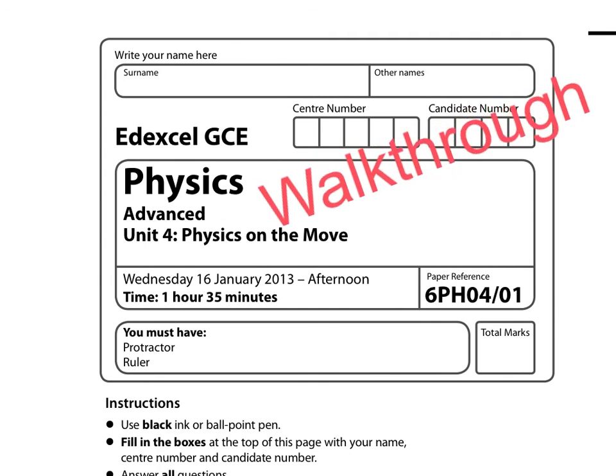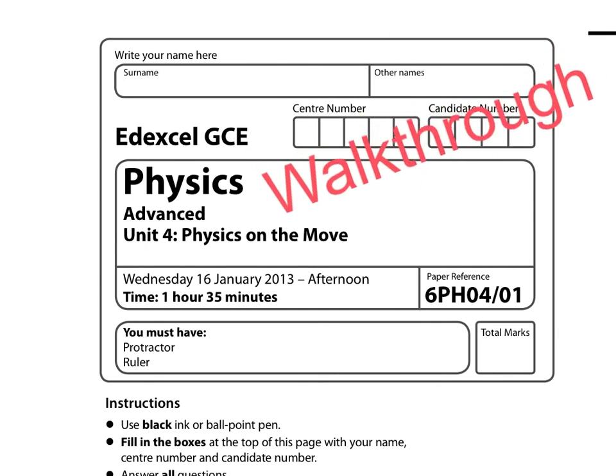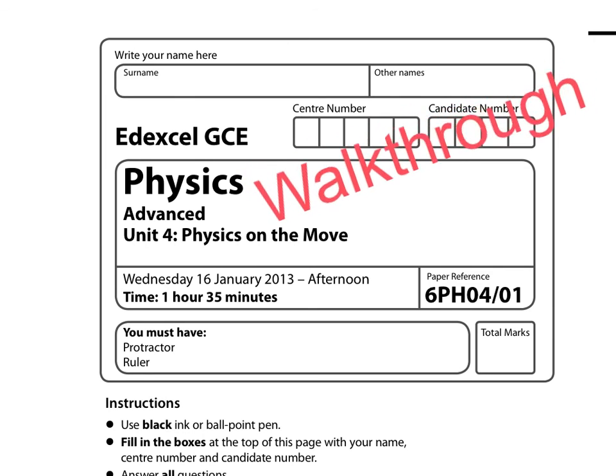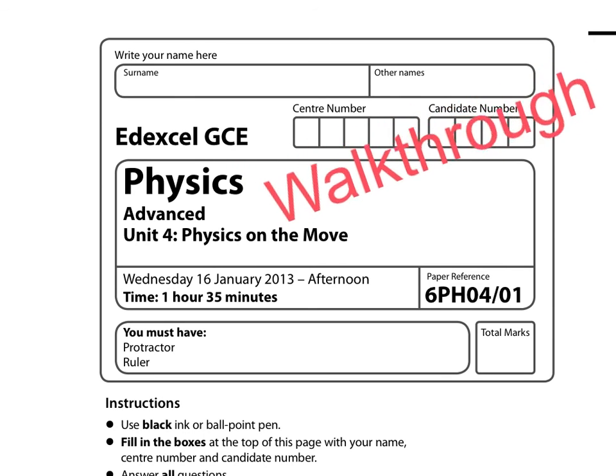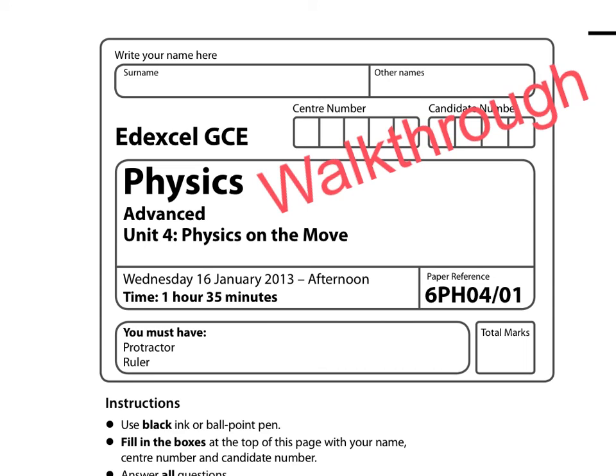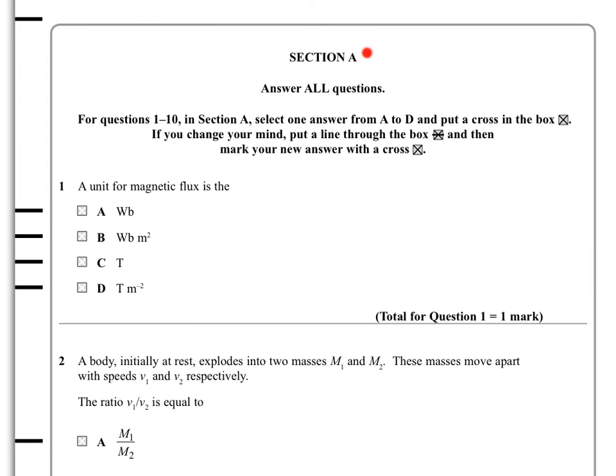Okay, so here we go with Edexcel GCSE A2 Physics Unit 4, Physics on the Move for January 2013. Section A is a multiple choice section, but because this is largely a synoptic paper, it's important to remember that if you blast through these ten questions having to pick up all these different topics, then the likelihood of you making a mistake somewhere increases.